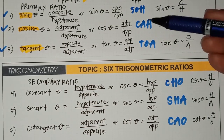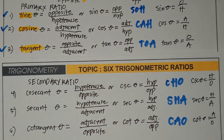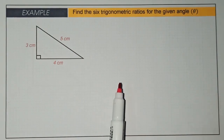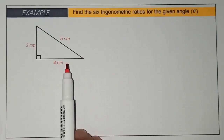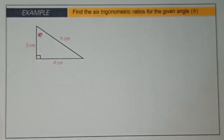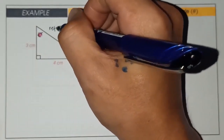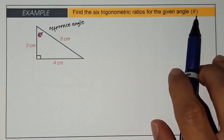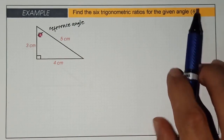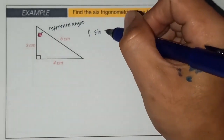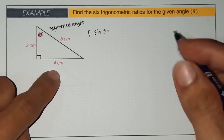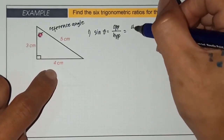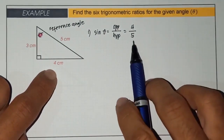For example, consider a right triangle with a hypotenuse of 5 cm. Let's say this is our reference angle theta. We will now find the six trigonometric ratios for theta. The opposite side is 4 and the adjacent side is 3. Sine theta equals opposite over hypotenuse, so sine theta equals 4 over 5. Cosine theta equals adjacent over hypotenuse, so cosine theta equals 3 over 5.